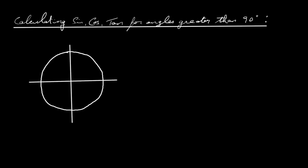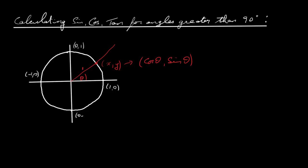We saw before in a previous video that if you take any point on the unit circle, this is x, y. But you can rewrite that as cos theta, sin theta, where theta is your angle and the radius is just one unit. So our coordinates around the circle are: 1,0 at the right; 0,1 at the top; minus 1,0 at the left; and 0, minus 1 at the bottom.